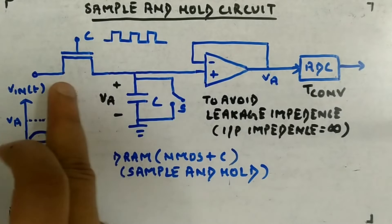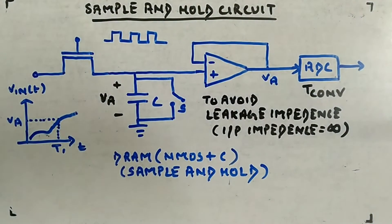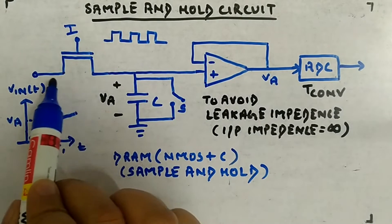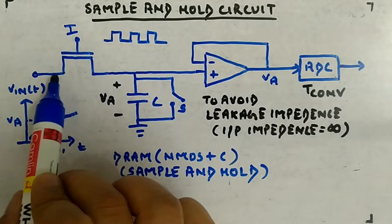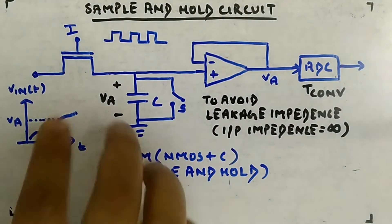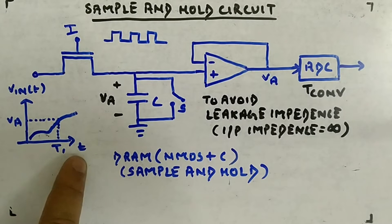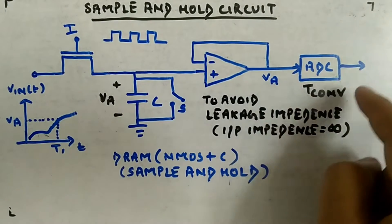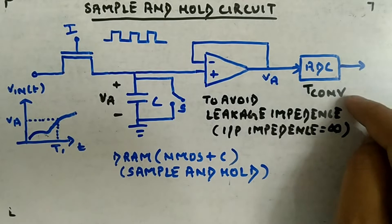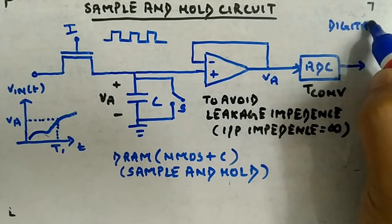If the control signal i is 1, the NMOS will be on and this point will be connected to the capacitor input. If i is zero, there will be no connection between these two points. This is the main circuit — the sample and hold part consists of the NMOS and the capacitor. You are applying the analog input corresponding to time, followed by a voltage follower, then an analog-to-digital converter with conversion time tconv, giving a digital output.